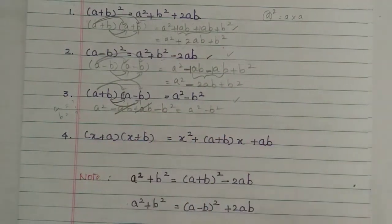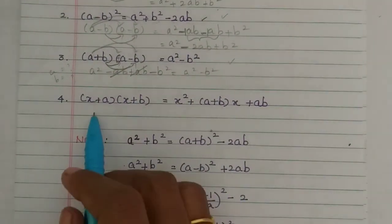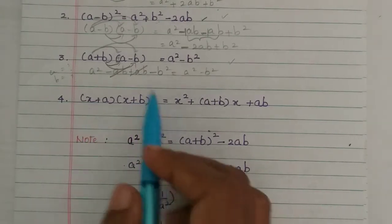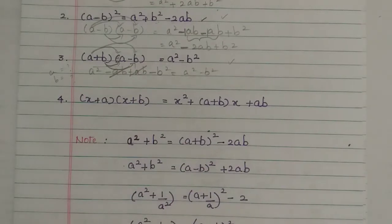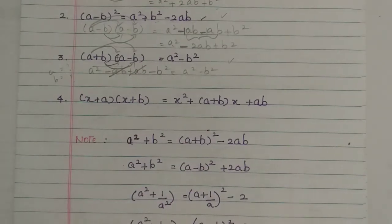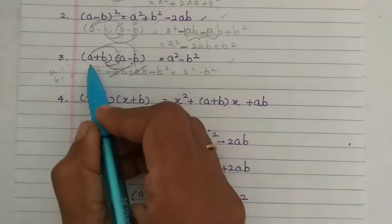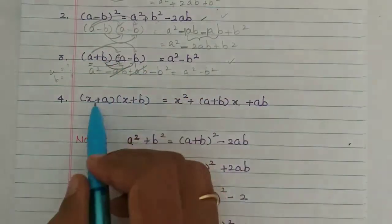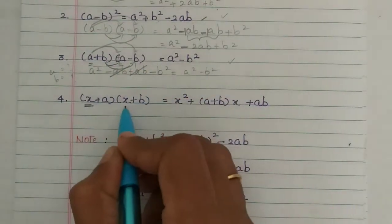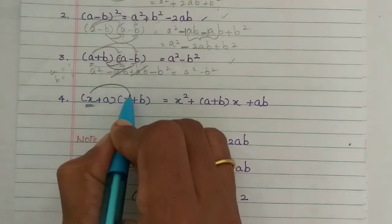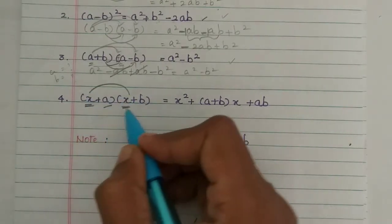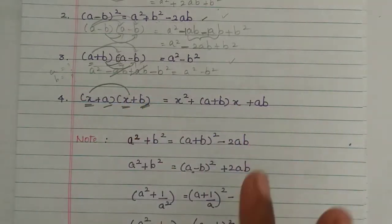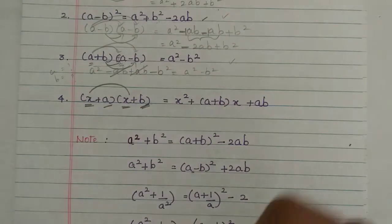So this is the fourth formula: x plus a into x plus b. Now x is the same in both brackets, but a and b are different constants. This is how you can differentiate the third formula and the fourth formula.